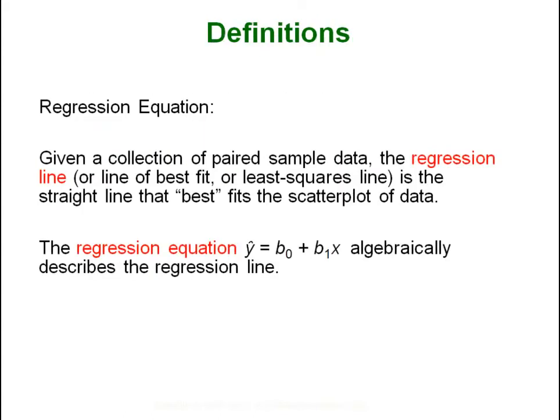Given a collection of paired sample data, the regression line — also called the least squares line of best fit — is simply the straight line that best fits your scatter plot of data. That doesn't mean it goes through the most number of dots. It just means that its distance from the line to each dot is minimized. You are finding a line that is as close as possible to all of the points overall.